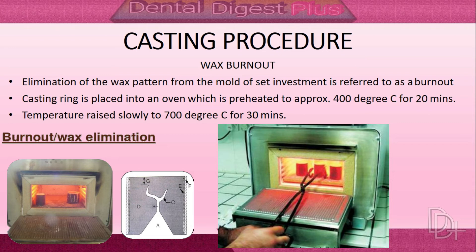The eighth step is wax burnout. Elimination of the wax pattern from the set investment mold is referred to as the burnout procedure. The ring may be placed on a raised object within the oven to completely eliminate the wax and form a cavity into which molten metal is cast. The oven is preheated to approximately 400°C for 20 minutes, then temperature is raised slowly to 700°C for 30 minutes. The ring should be maintained at maximum temperature long enough to minimize a sudden temperature drop, which could result in an incomplete casting due to excessively rapid solidification of the alloy.